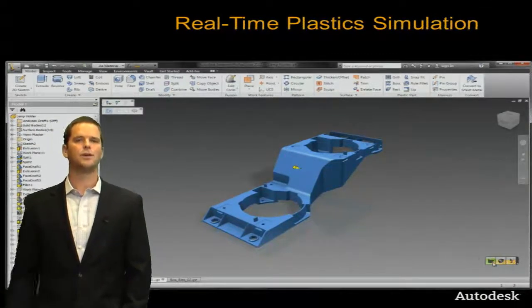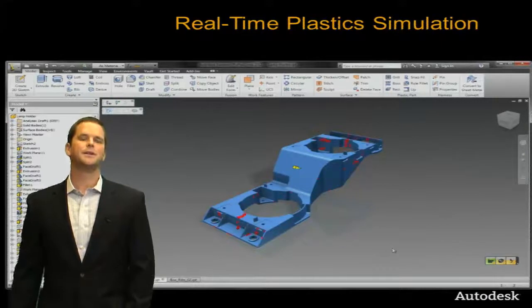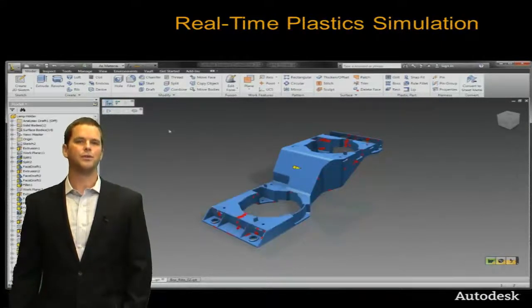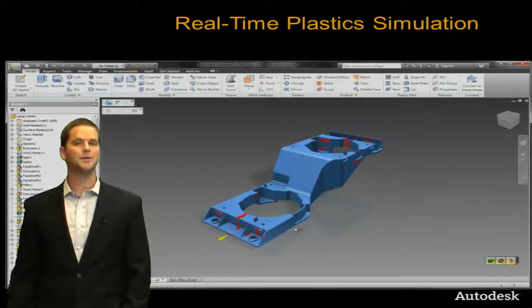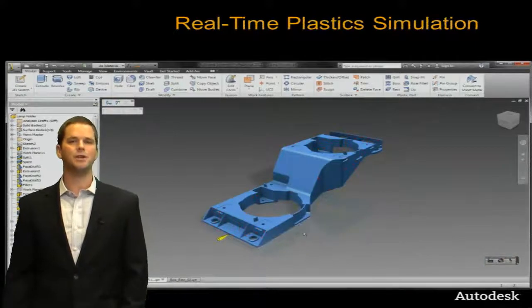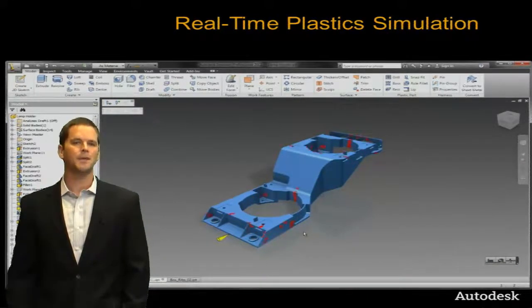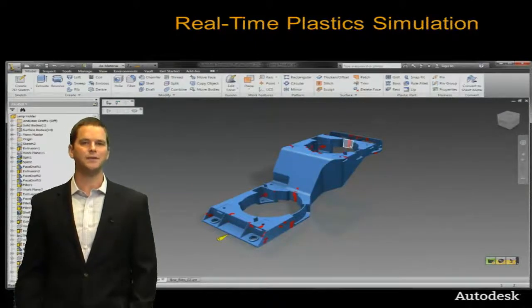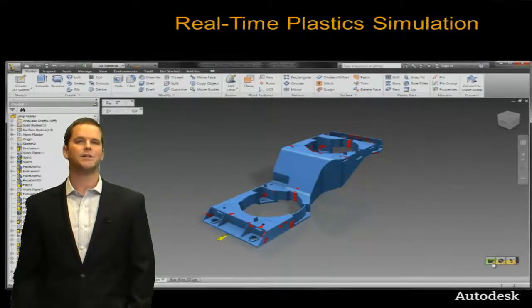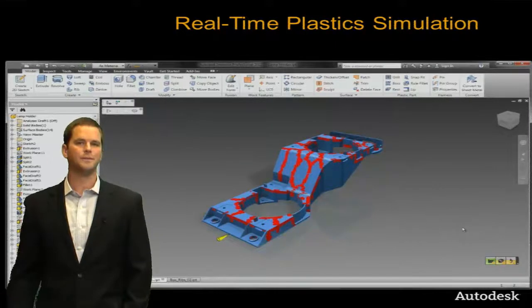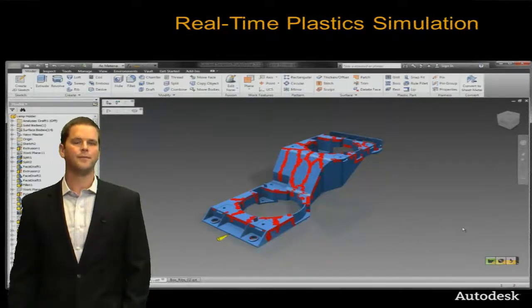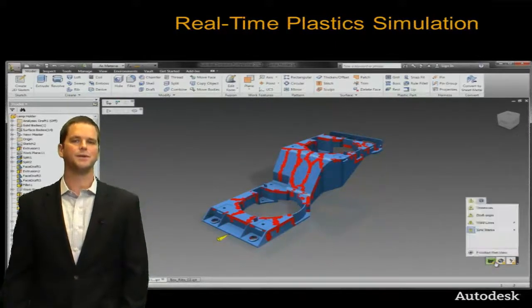The next thing is weld lines. These are available because we're doing real-time fill analysis. The alert gives you the option to pull up the animation and the injection location toolbars. The best part is we can actually play with different gating configurations to get the best placement of the weld line — and for aesthetics, this is mandatory.